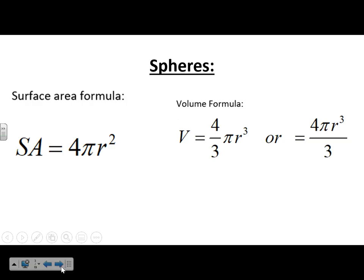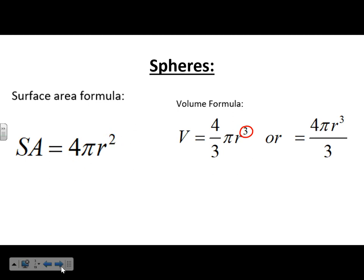Here are the formulas for the surface area and volume of a sphere. Make sure you realize: surface area is 4πr² and volume is 4πr³/3 — not just the surface area divided by 3. We can remember this because surface area is an area, so units are always squared, and volume units are always cubed.